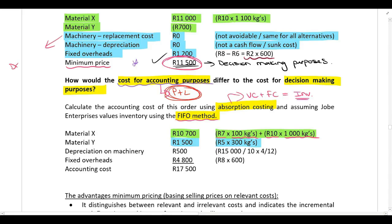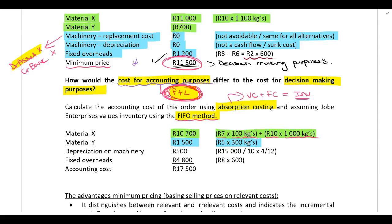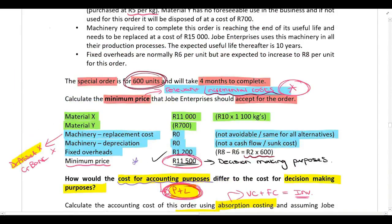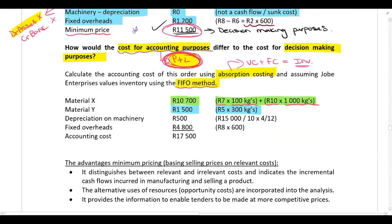When we buy the machine, we debit assets and credit bank or loan — there is no effect on profit and loss from the 15,000 Rand purchase itself, because it is treated as an asset, not an expense. What does affect profit and loss is depreciation. The machine's useful life is 10 years, and this order takes four months, so the depreciation applicable to this order is four months out of the total 10 years.